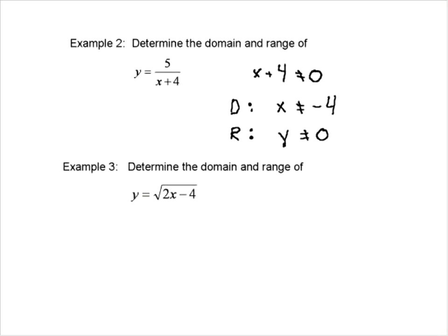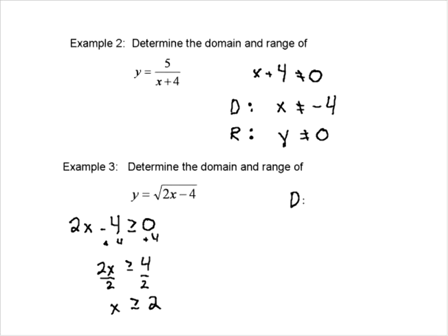To solve this, we're going to say 2X minus 4 always has to be greater than or equal to 0. So if we add 4 to both sides, we get 2X is greater than or equal to 4, and dividing by 2, we get that X has to be greater than or equal to 2. That's our domain: X is greater than or equal to 2.